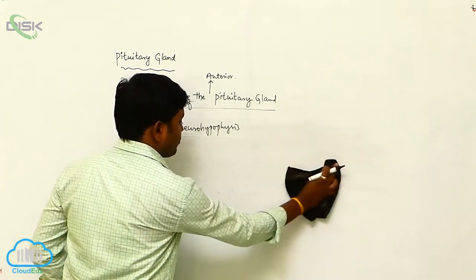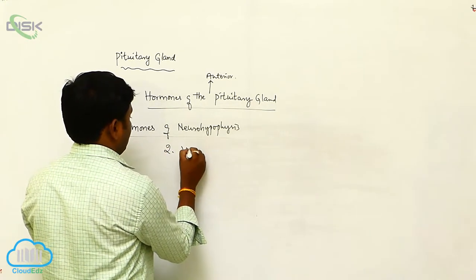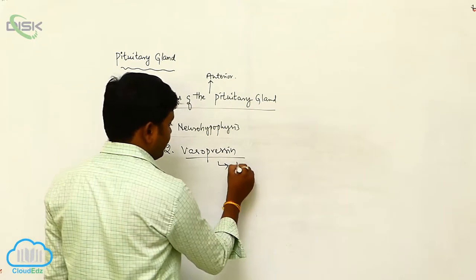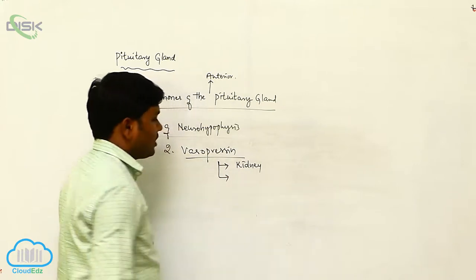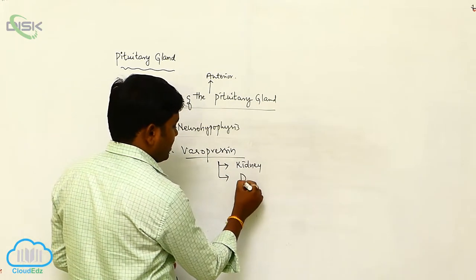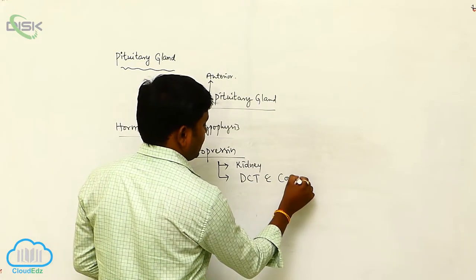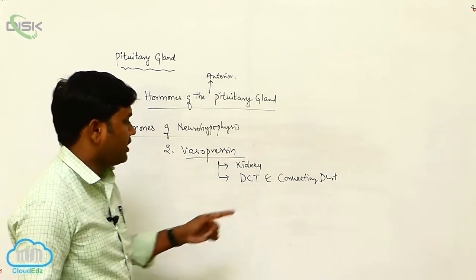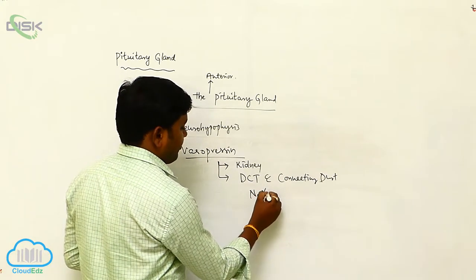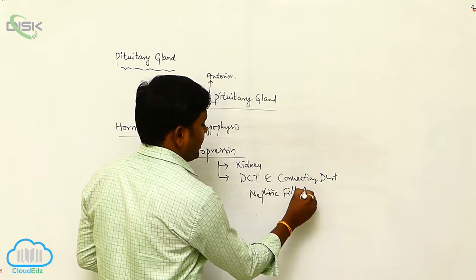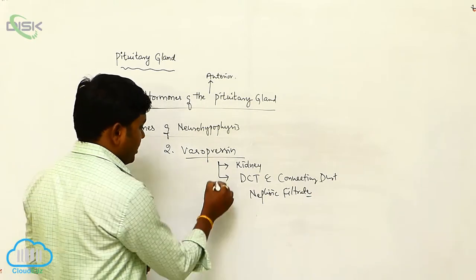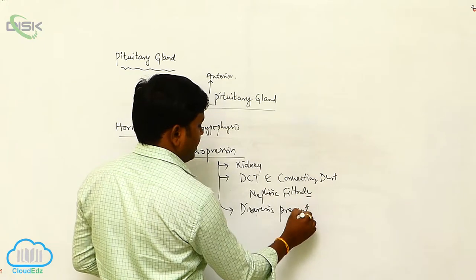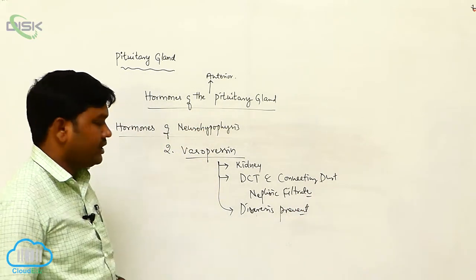Next is vasopressin. Vasopressin works on the kidney and it controls the reabsorption of water from the distal convoluted tubule and connecting duct from the nephric filtrate. By this process, diuresis is prevented.